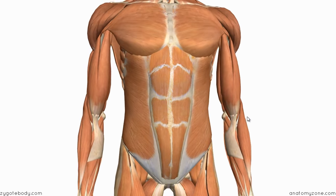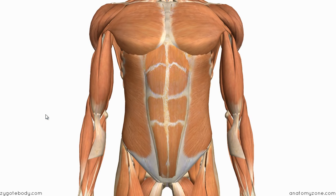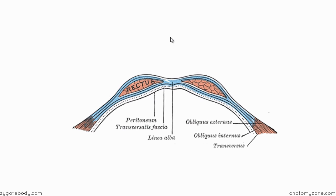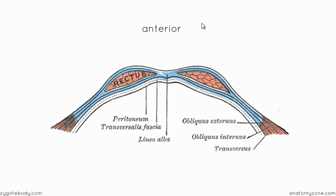Now let's take a look at a cross section. We're going to slice the abdomen in half and look at the different layers we pass through. Anterior is this side, and you can see the rectus abdominis muscles. Laterally, you can see the three muscles: the external oblique, the internal oblique, and the transversus abdominis.